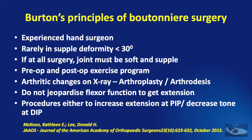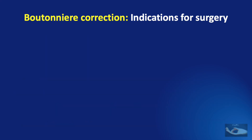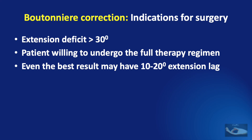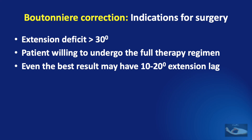In doing surgery for correction of boutonniere deformity, we should never jeopardize flexor function to get back extension. The procedures can either increase extension at the PIP joint or decrease the hyperextension at the DIP joint. The indications for surgery are quite rigid: the extension deficit must be more than 30 degrees at the PIP joint, the patient must be willing to undergo the full therapy regimen, and even the best result may have 10 to 20 degrees of extension lag. Surgery must be contemplated only on a patient who understands there may be some loss of flexor function.